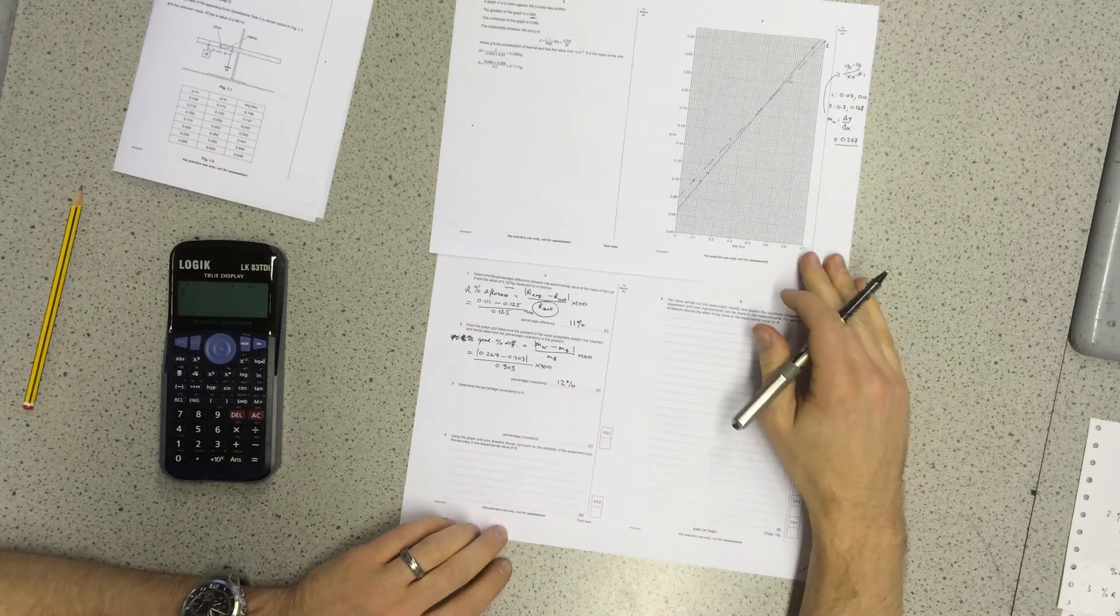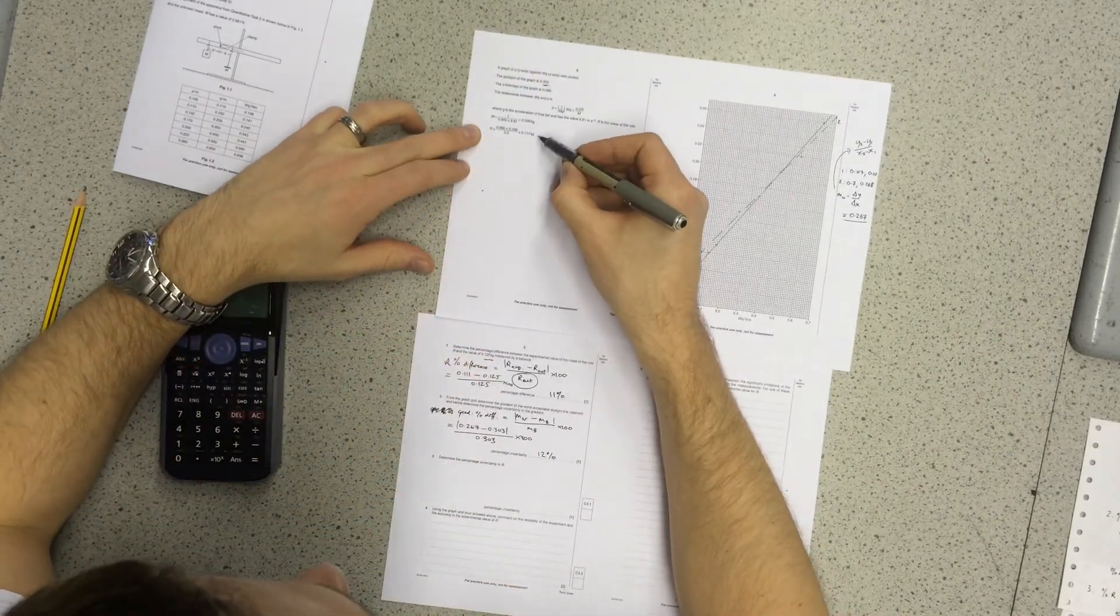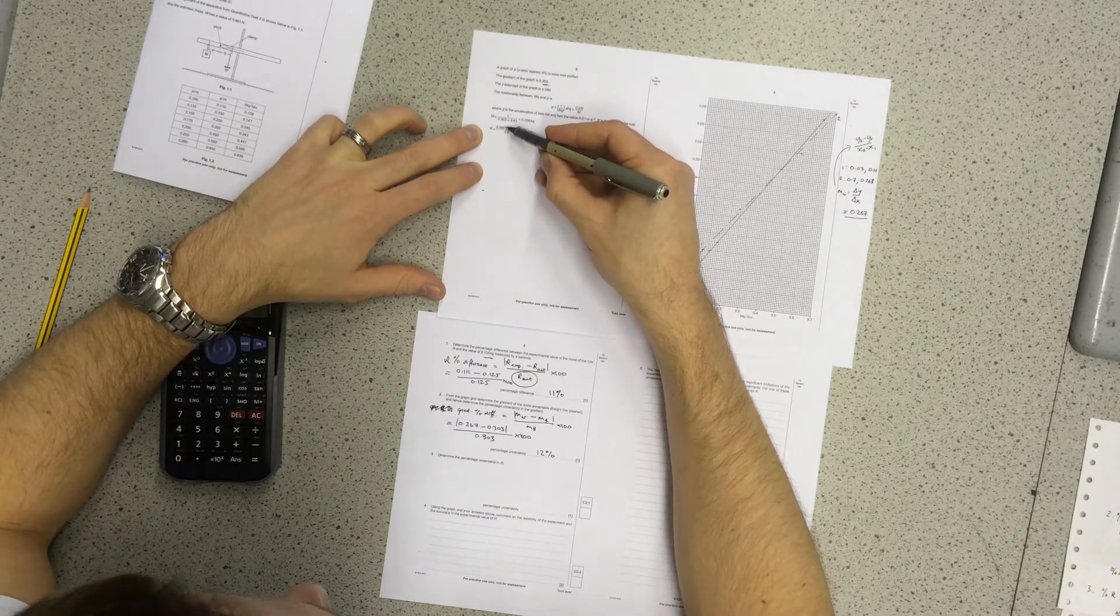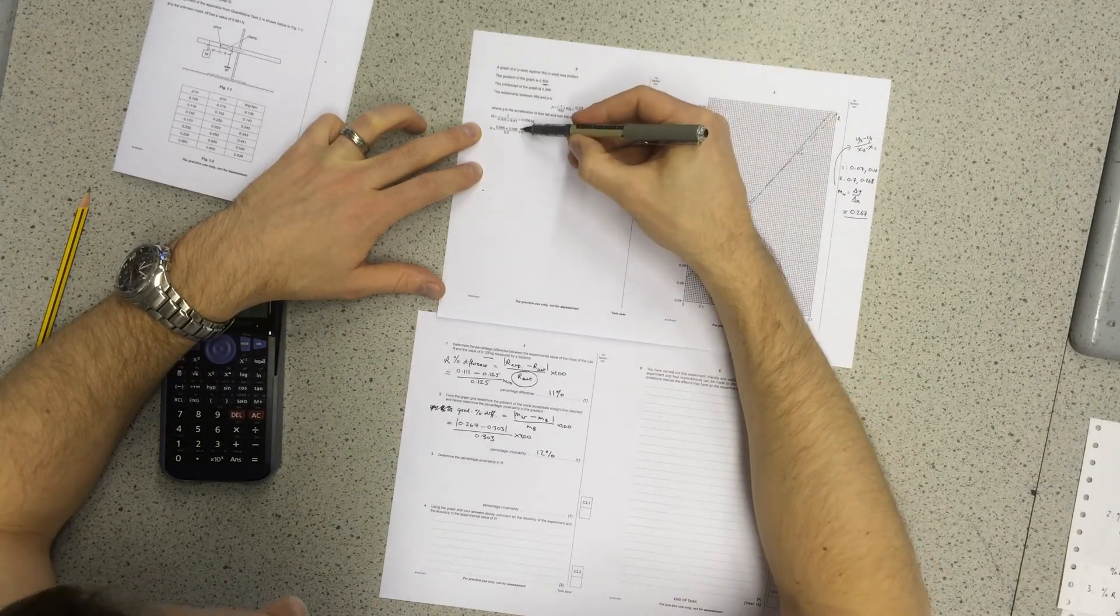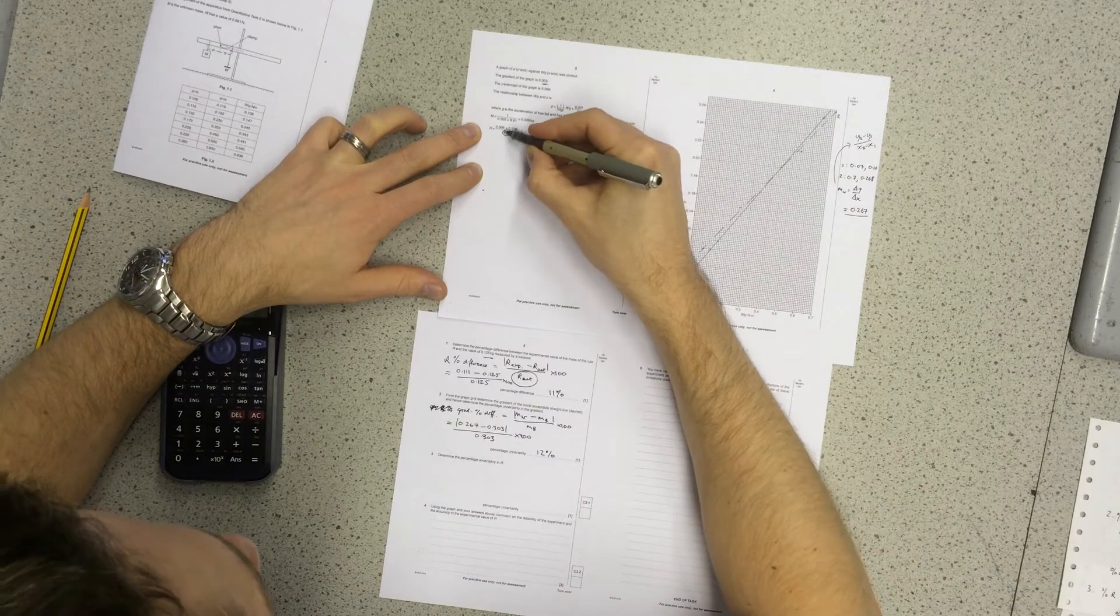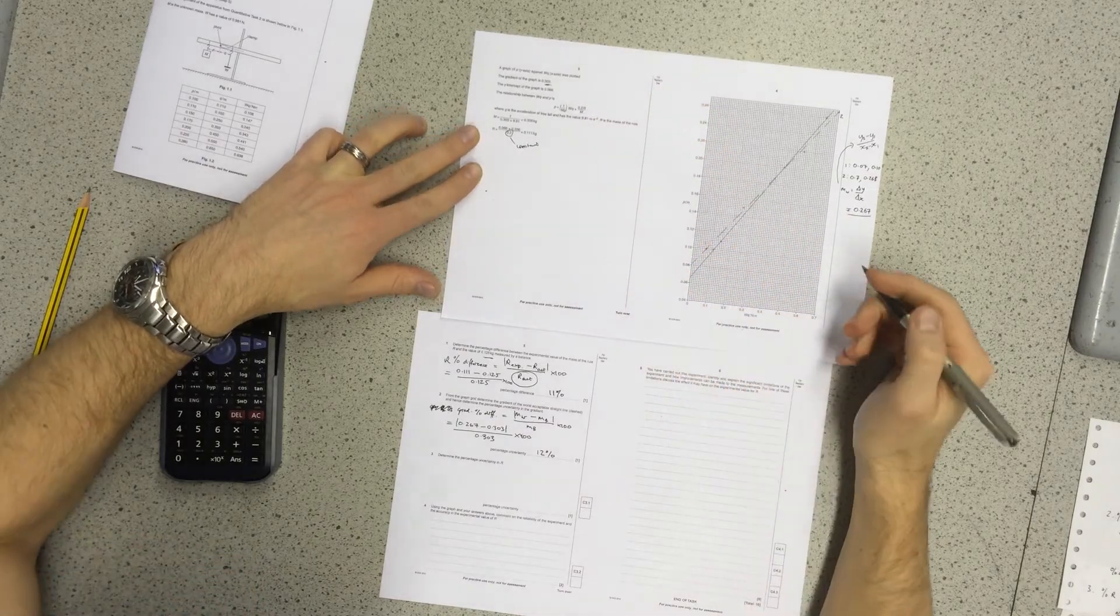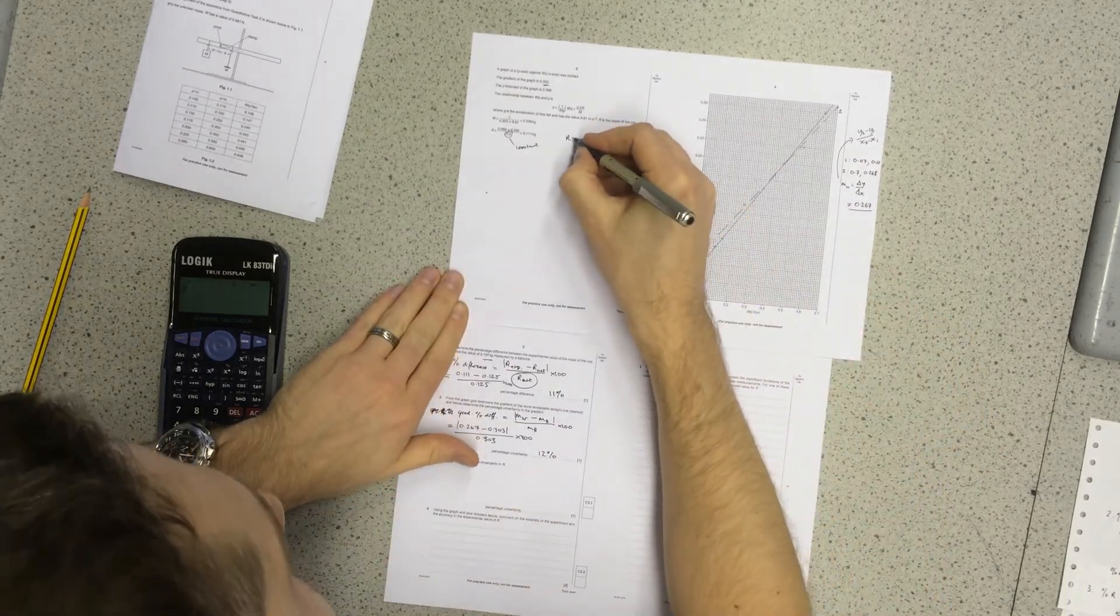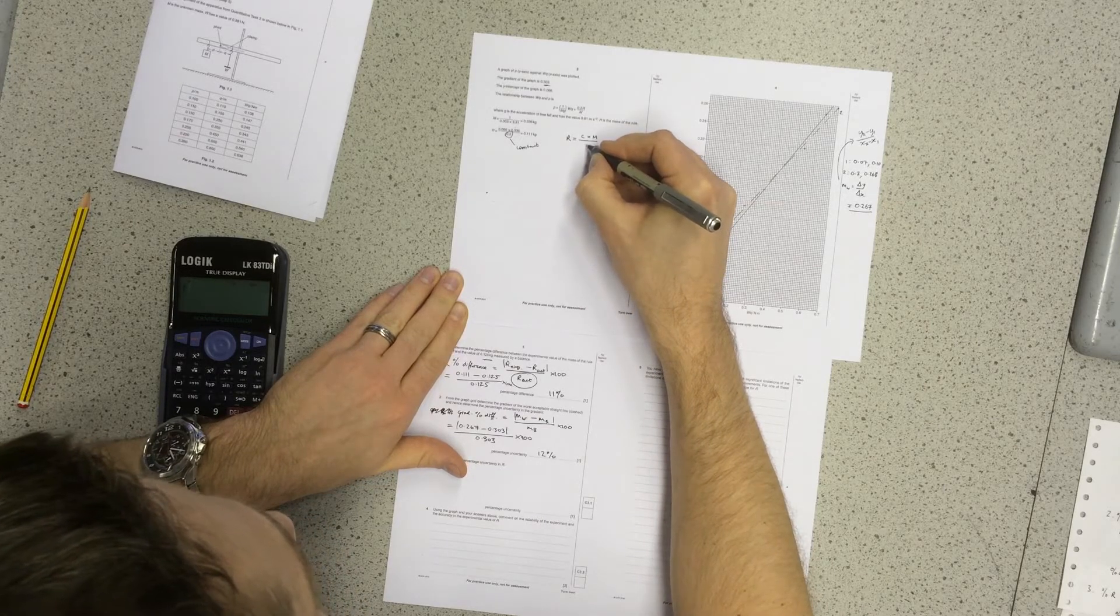So I've got the percentage difference in R, the percentage uncertainty in the gradient. Next, the percentage uncertainty in R. For here, I need to look at the calculation for R that was done. So this is the experimental uncertainty. This value here, 0.066, is the y-intercept. And 0.336, that's the m value. 0.2, that's a constant there. So that does not have any uncertainty, but these two do have uncertainty.